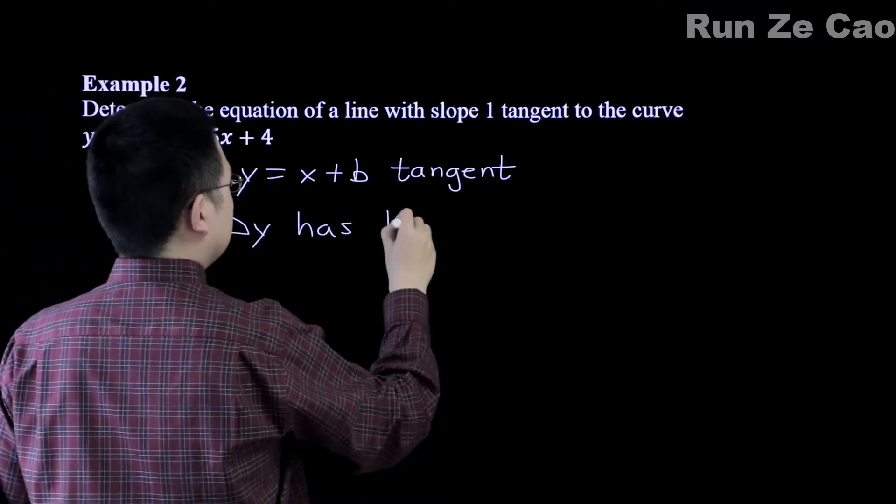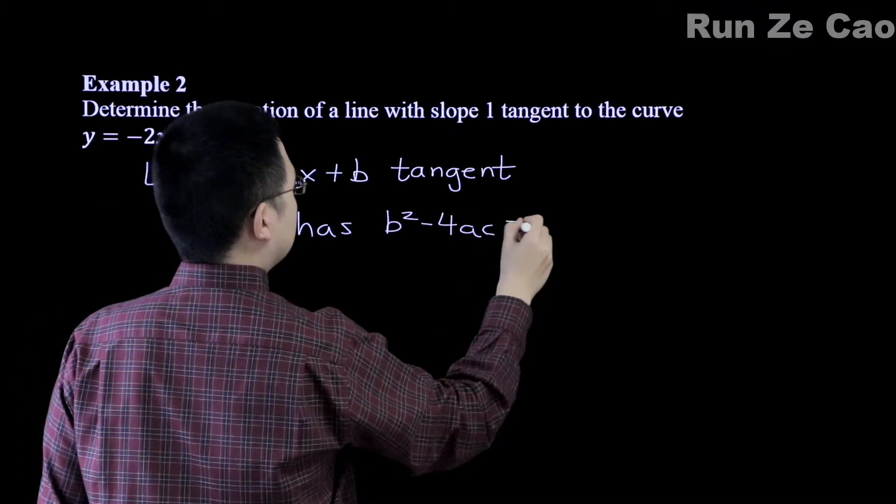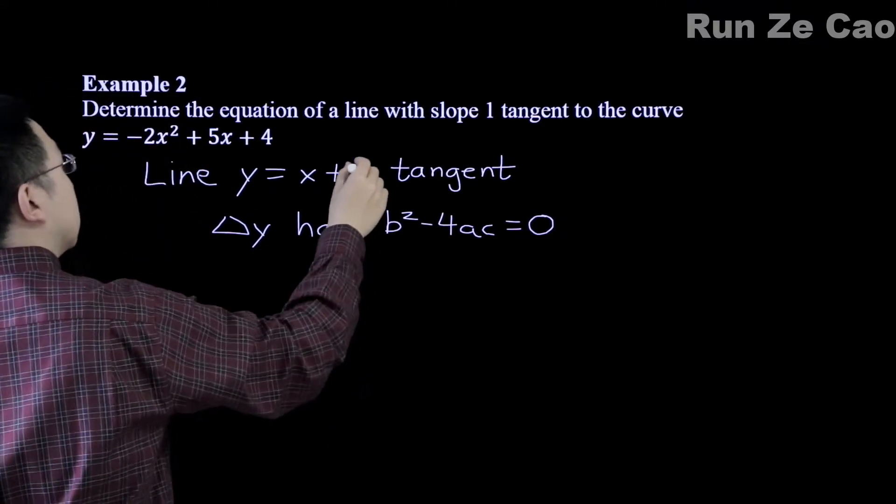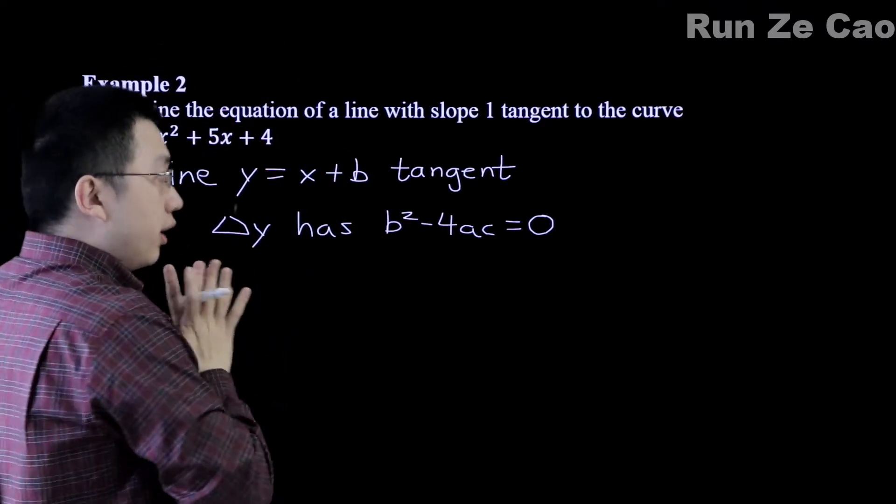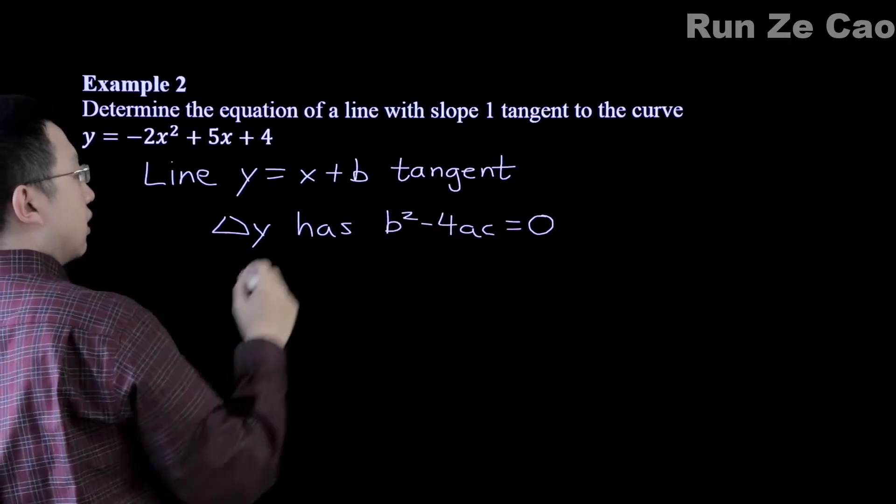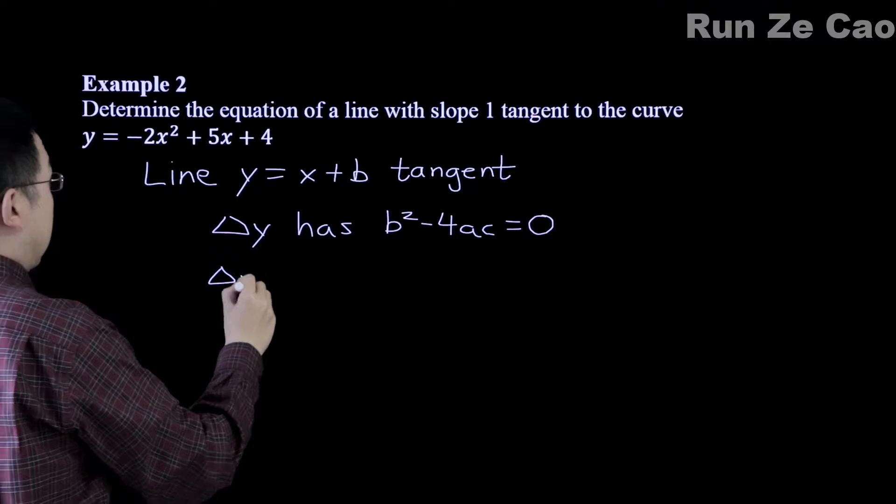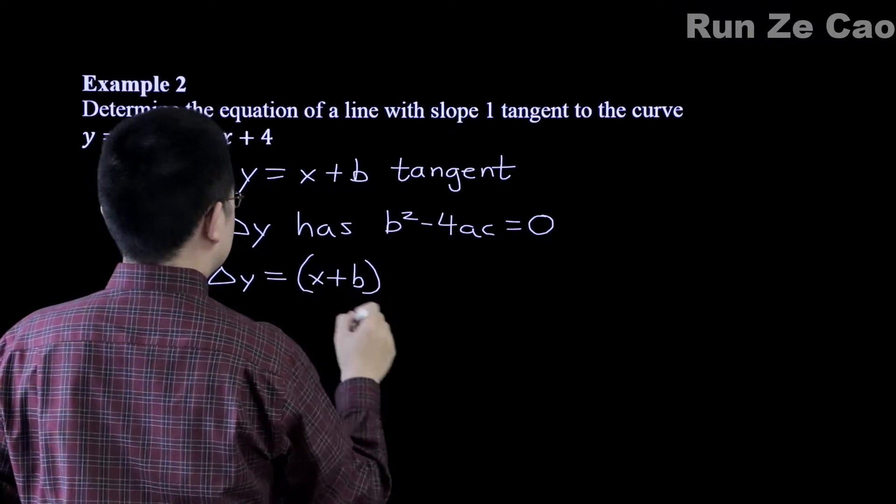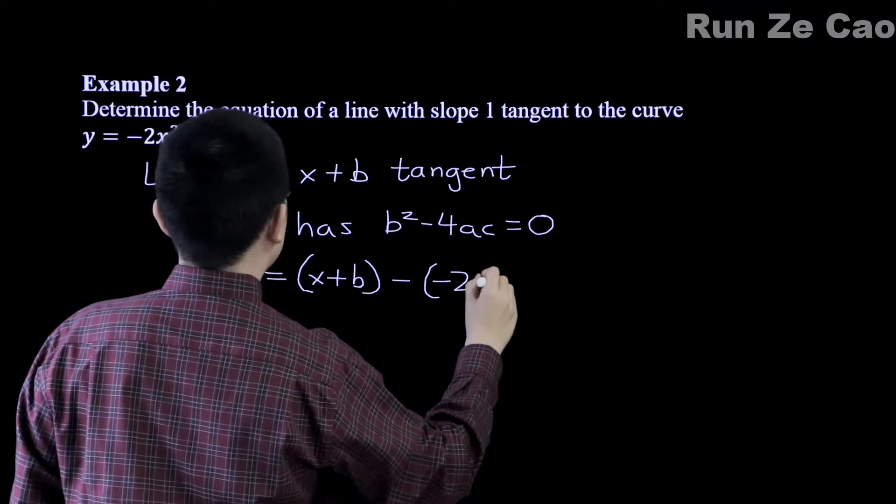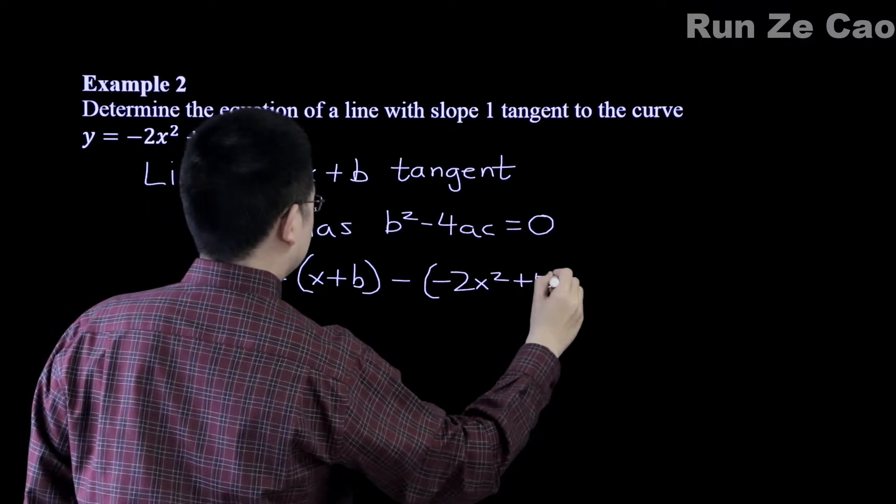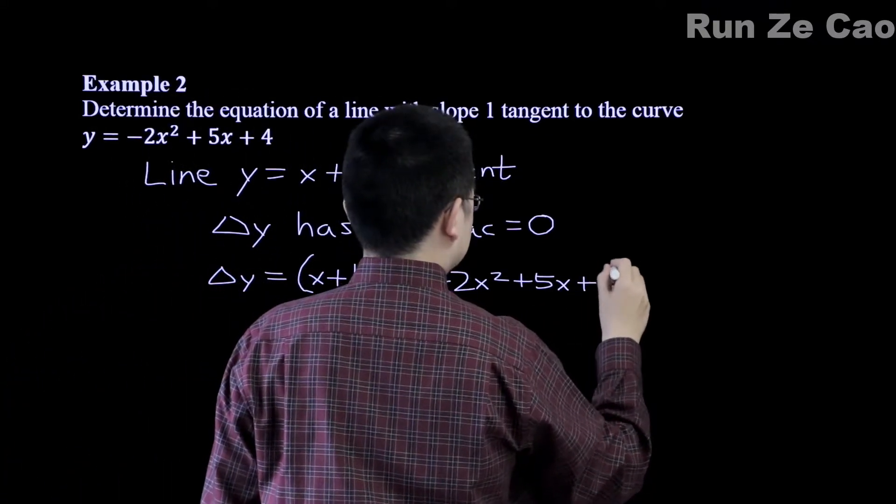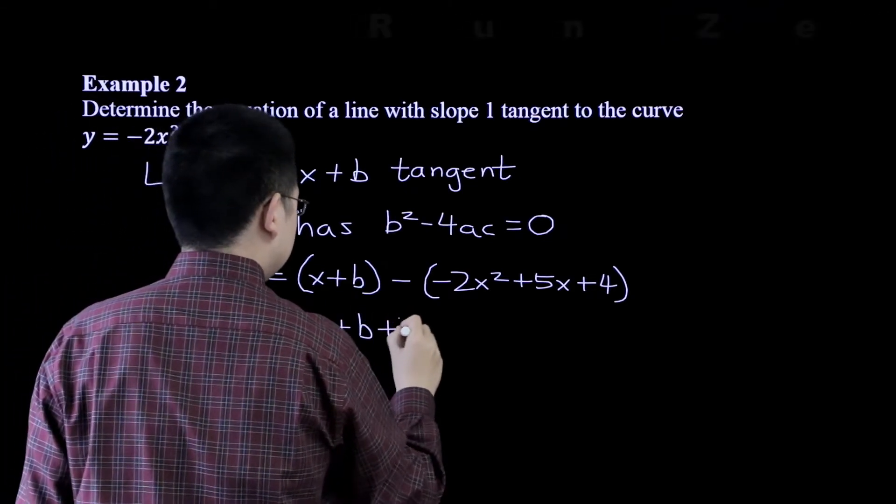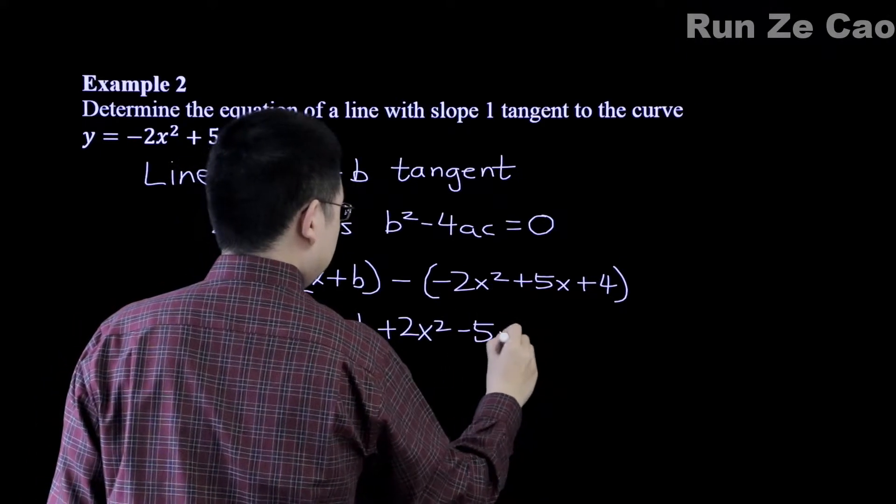What this implies is that delta y has b squared minus 4ac equals 0. Now of course if you aren't very used to this sort of thing, you might want to use a different letter here like d or e or whatever, but the point remains that you get this for your delta y. So delta y is actually equal to x plus b minus negative 2x squared plus 5x minus 4. So x plus b plus 2x squared minus 5x minus 4.